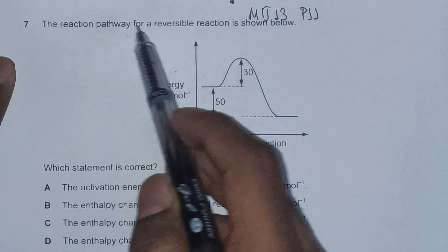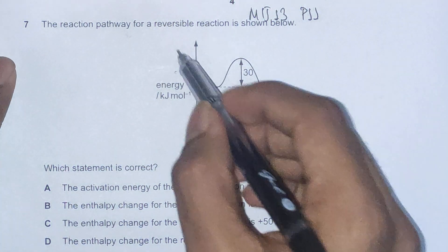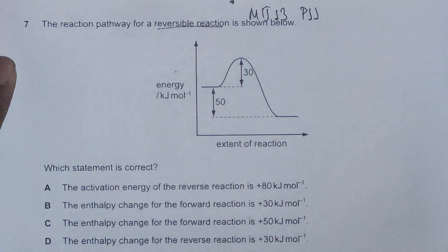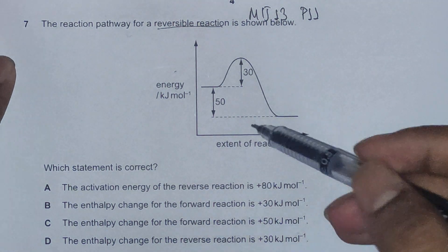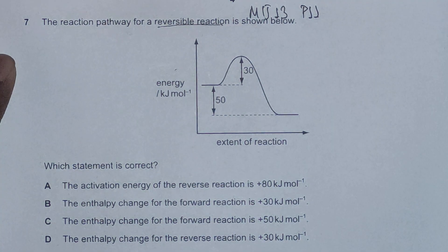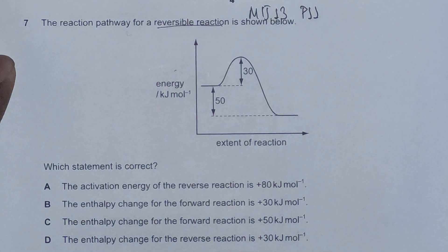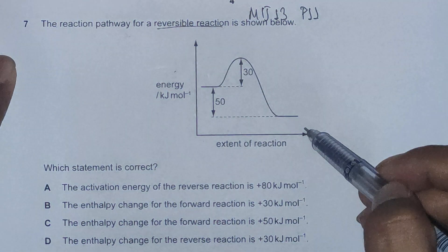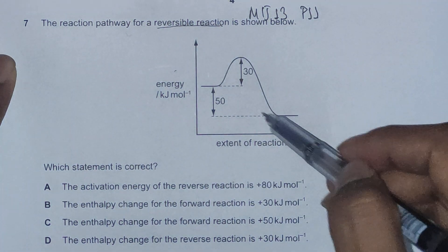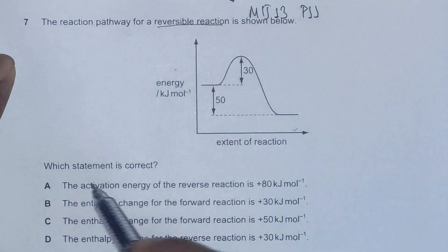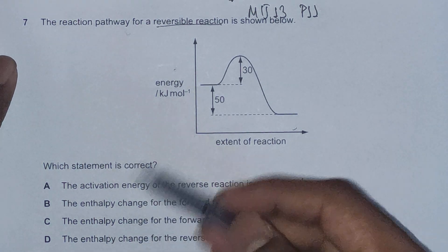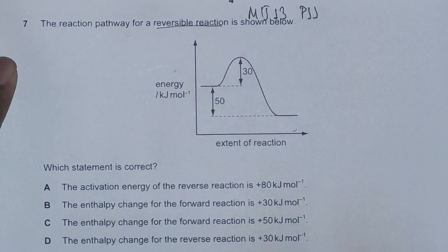The question reads: the reaction pathway for a reversible reaction is shown. A reversible reaction would mean the reaction has both a forward and backward direction, as shown in the energy diagram we have been given. Which statement is correct? We have been given four statements.